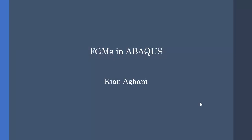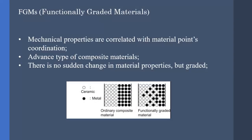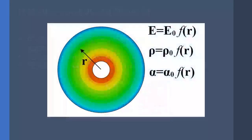In this video we are going to model FGMs in Abaqus. We need to answer two questions: first, what are FGMs, and second, how we can model them in Abaqus. FGM stands for Functionally Graded Material, in which the material properties vary with, for example, coordinates. An example is a disk whose mechanical properties are functions of radius — for example, elastic modulus, density, or thermal conductivity.